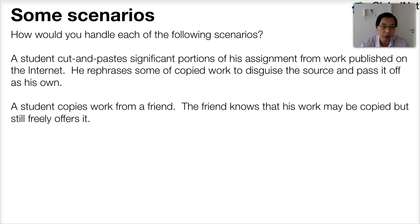Here's the second scenario. A student copies work from a friend. The friend knows that his work may be copied but still freely offers it. So the student who's copied the work clearly has committed an academic offence, but what about the friend who offered the work in the first place? Has he also committed an academic offence? That's an open question.